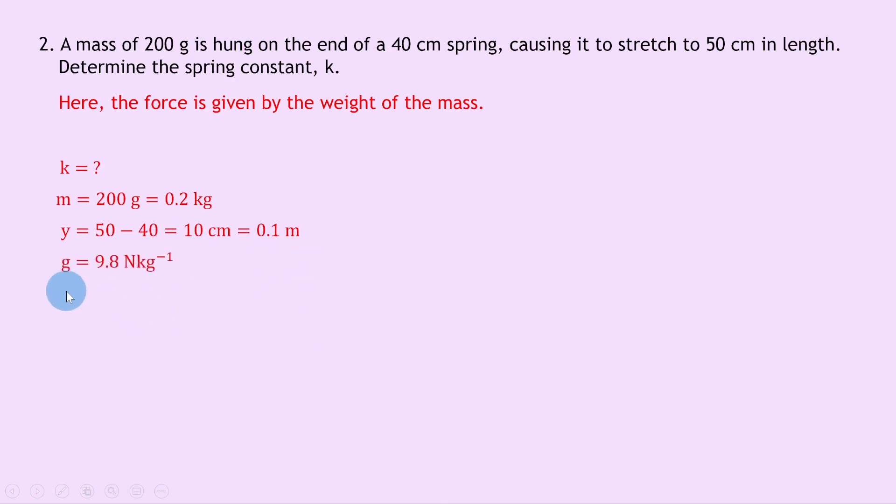Remember, gravitational field strength on earth is given by 9.8 newtons per kilogram. So writing down our equation for Hooke's law we have F equals minus ky, where we're using y for displacement because the object is moving vertically up and down rather than side to side.